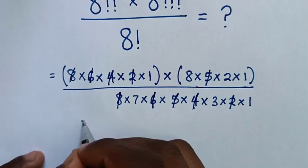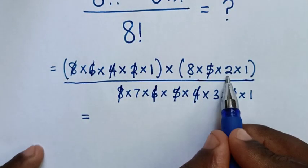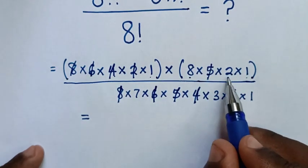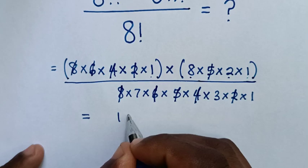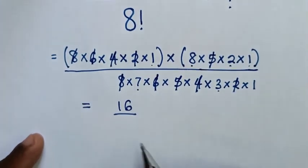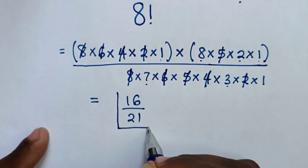So, it will be equal to, from here 8 times 2 is 16, then from 16, 1 times 1 is 1, 16 times 1 is 16, then over 7 times 3 is 21, so this is our final answer.